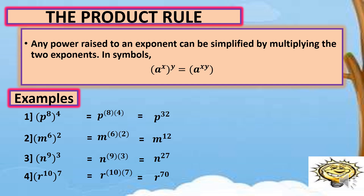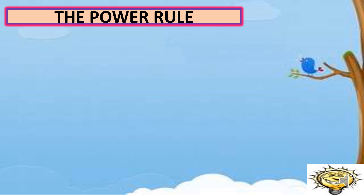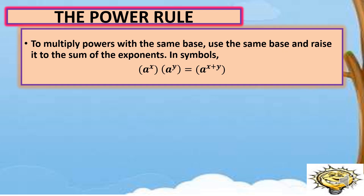The second rule is about the power rule. By definition, to multiply powers with the same base, use the same base and raise it to the sum of the exponents. In symbols, a raised to x times a raised to y is equal to a raised to x plus y. As you can see in the definition, we have the same base or same variable, and what we do with the exponents is get their sum.